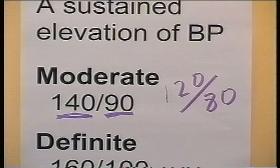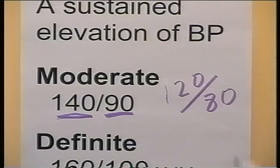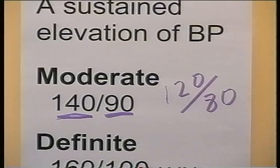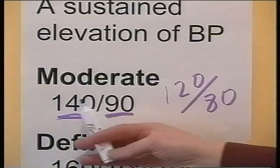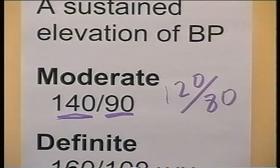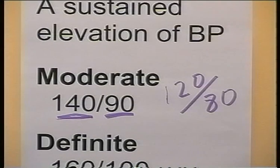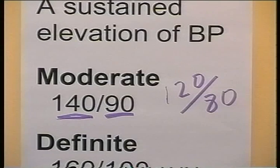The first figure always refers to the systolic, the second figure to the diastolic. So if every time you took a relatively young person's blood pressure it was 140 over 90, that would probably be moderate hypertension, and worth certainly getting a good medical opinion on whether it was worth treating.